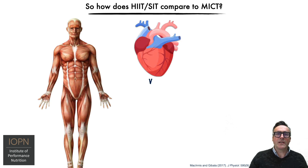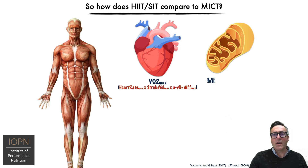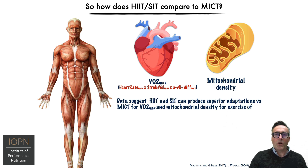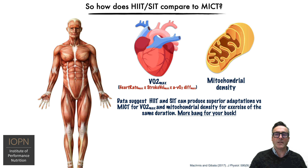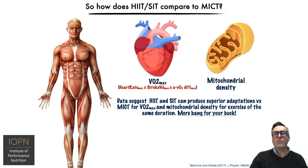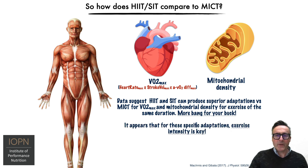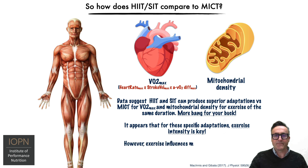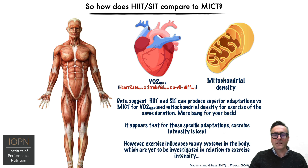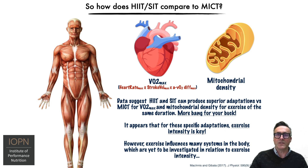So how does high intensity interval training and sprint interval training compare to medium intensity continuous training? The research tells us that HIIT and SIT can produce superior adaptation versus MICT for VO2 max and mitochondrial density for exercise of the same period — so you get more bang for your buck. But it appears that for these specific adaptations, the actual exercise intensity itself is the key. We should also bear in mind that exercise influences many systems in the body which are yet to be investigated in relation to exercise intensity, so you need to ask yourself what you are actually trying to achieve with a given training session.